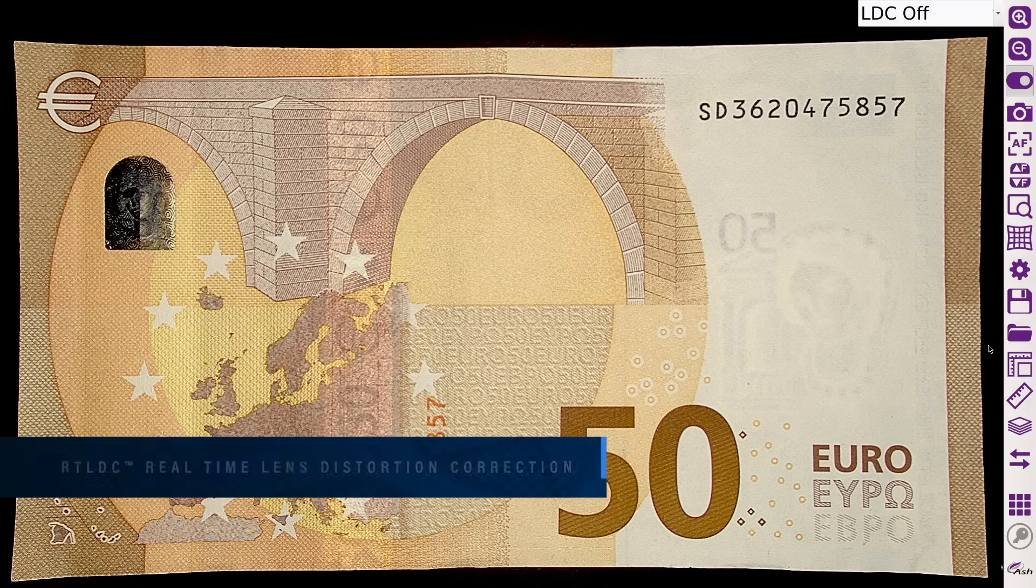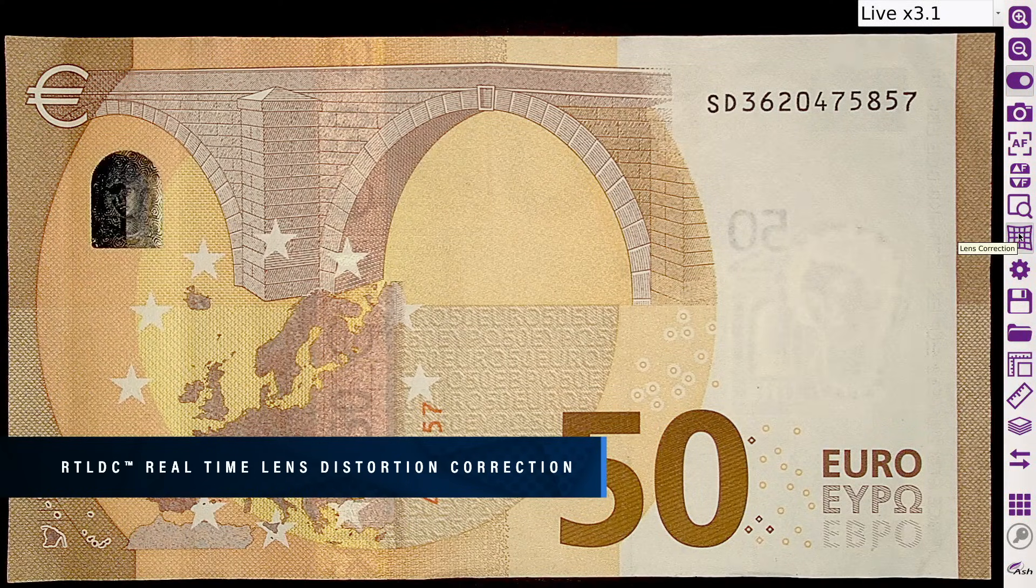Omni 3 incorporates unique real time lens distortion correction utilizing our new AshCam Plus. Allowing inspection of a true, undistorted representation of your sample.